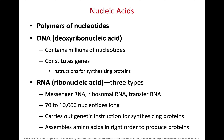We also have nucleic acids — the last biomolecule we'll talk about. A nucleic acid is a polymer made of nucleotides; the nucleotide is the monomer. The two most common nucleic acids are deoxyribonucleic acid — DNA — and ribonucleic acid — RNA. DNA and RNA have many similarities and differences.